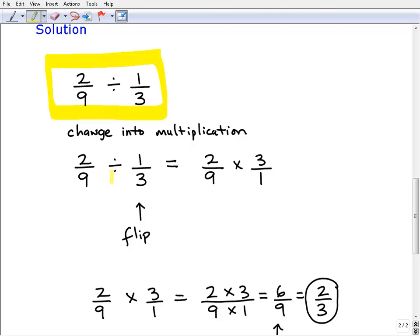So we have 2/9 divided by 1/3. How do you change this problem into an equivalent multiplication problem? What we're going to do is focus on the number to the right of the division symbol, or the division operator.